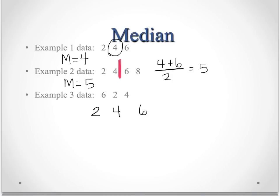When we do that, we get 2, 4, 6. And again here, the median would be 4, just like in the first example.